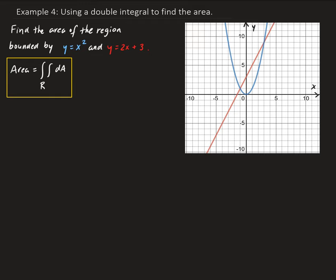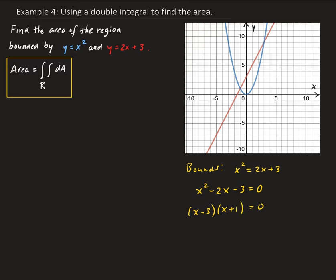Before we set up the integral, let's first find the bounds algebraically. We can do this by equating the functions equal to each other: x squared equals 2x plus 3. Rearranging gives x squared minus 2x minus 3 equals 0, which factors as (x minus 3)(x plus 1), giving us x equals 3 and x equals negative 1. Those are our boundary points.